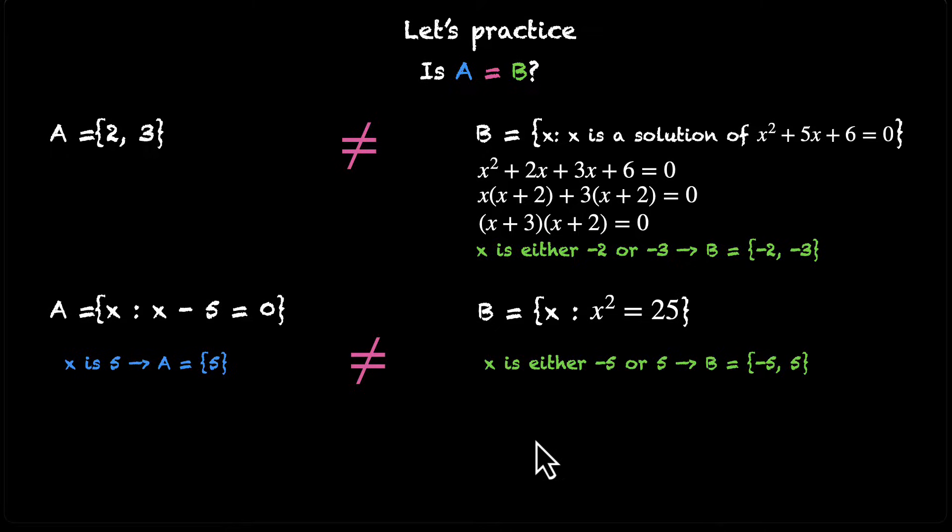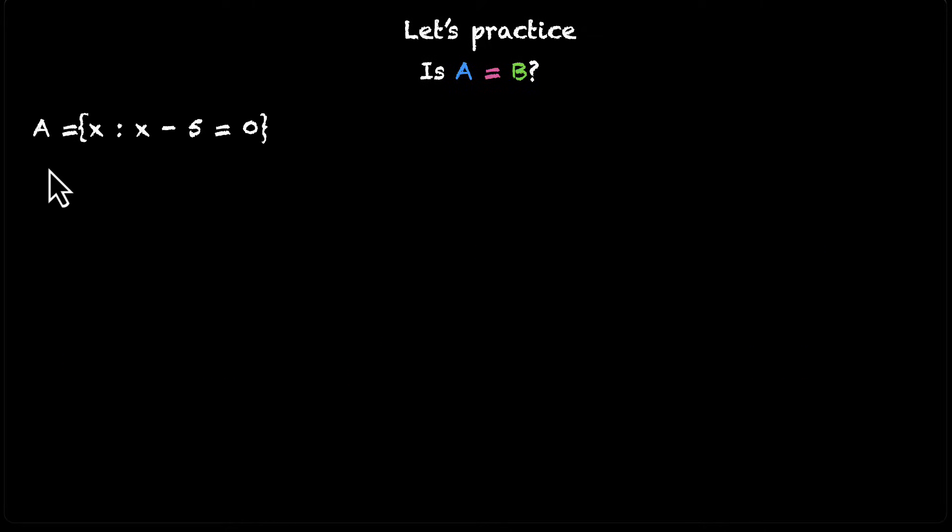Let's solve one last problem. Set A is the set of all X such that X - 5 = 0. We've picked this from the last problem. And we have changed set B. Set B now is the set of all X such that X is an integral positive root of the equation x² - 2x - 15 = 0. Think about it.